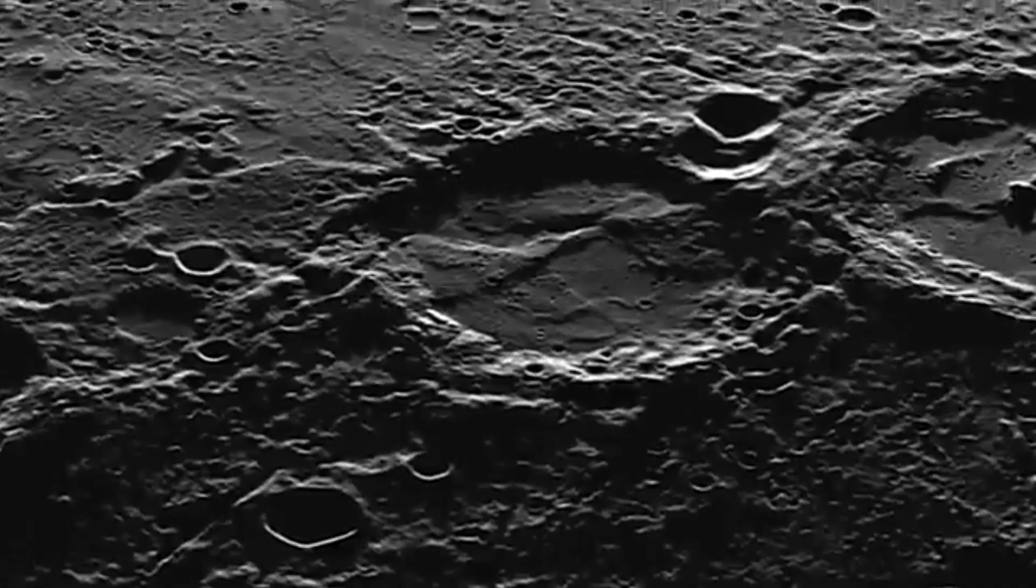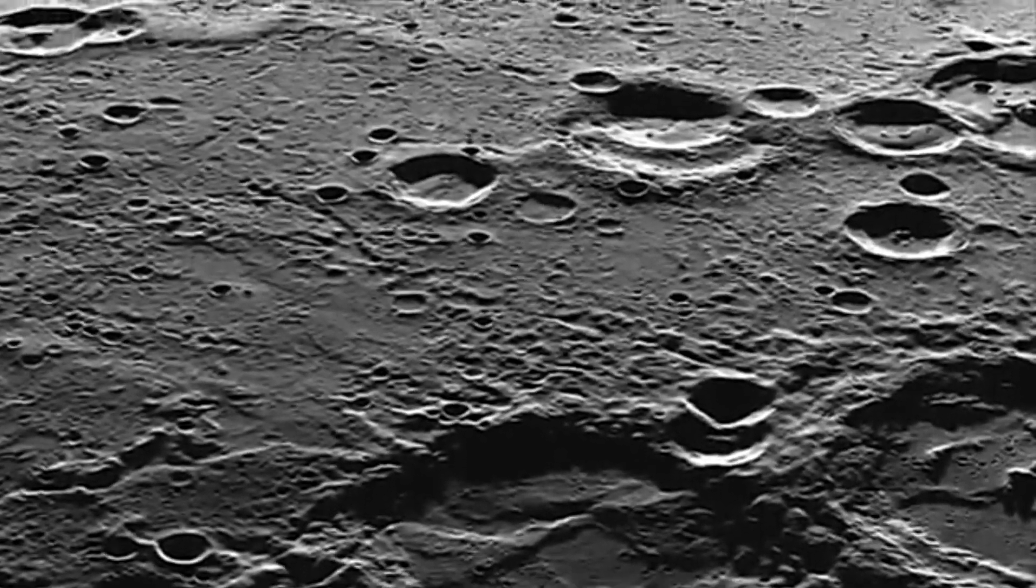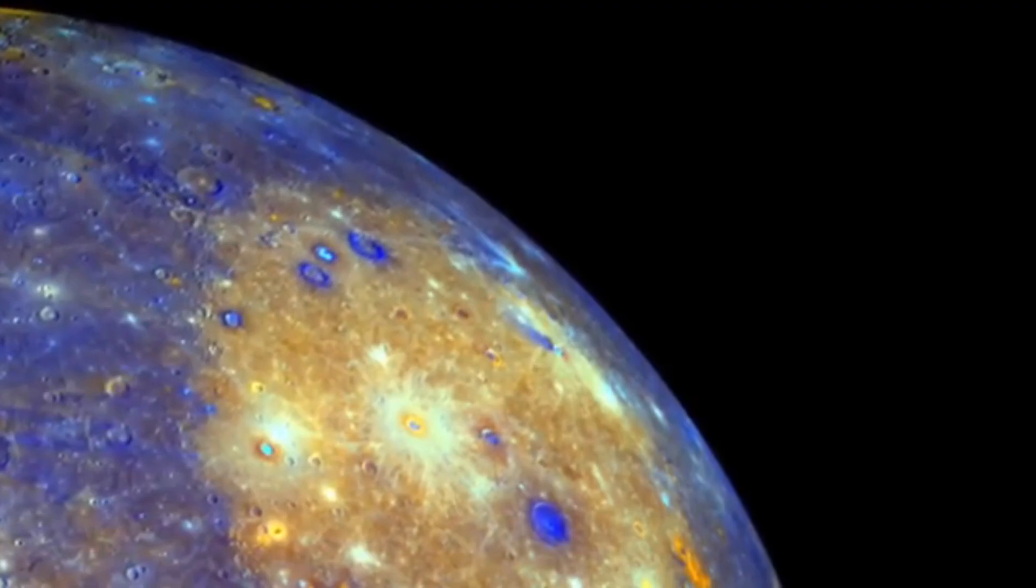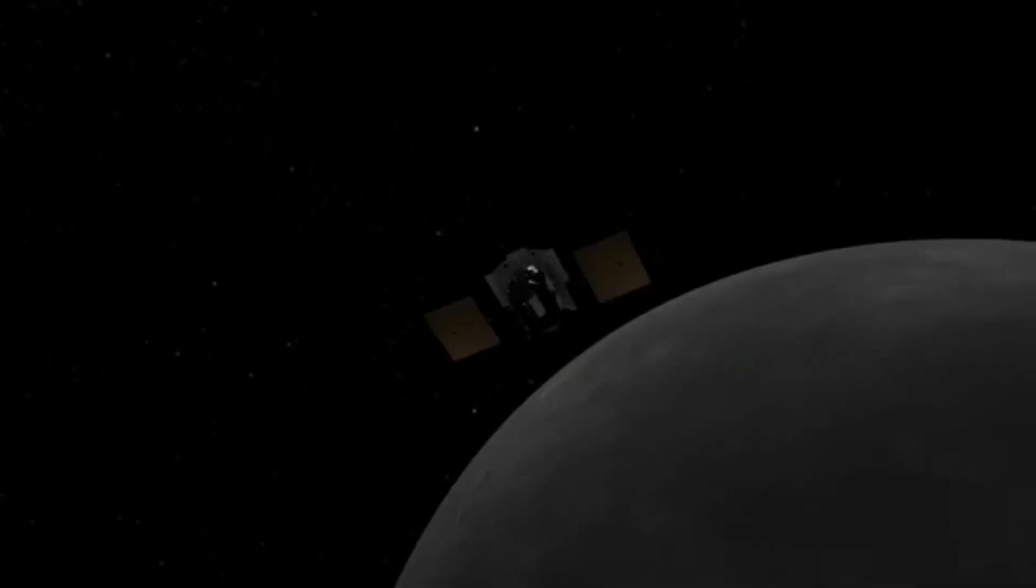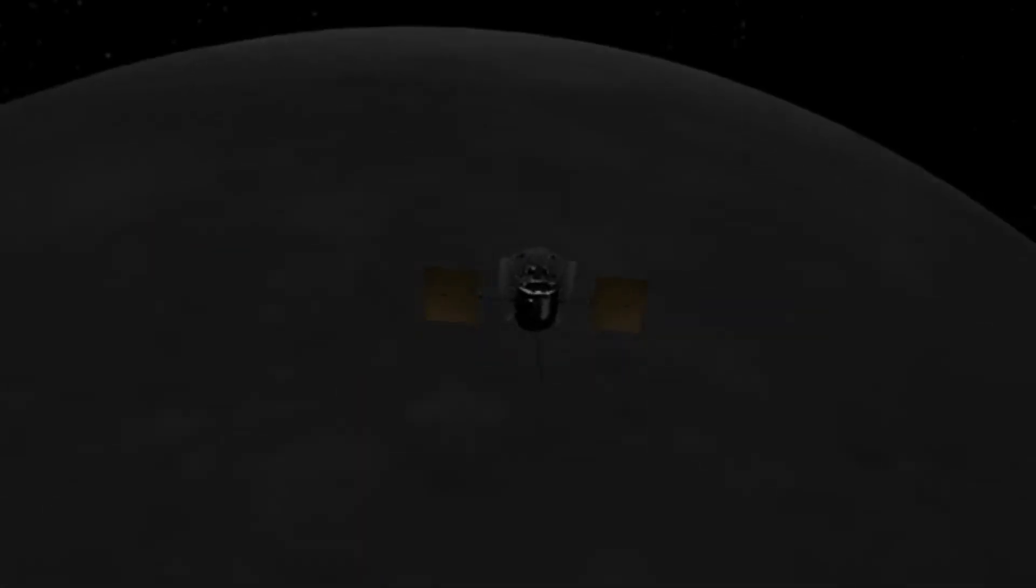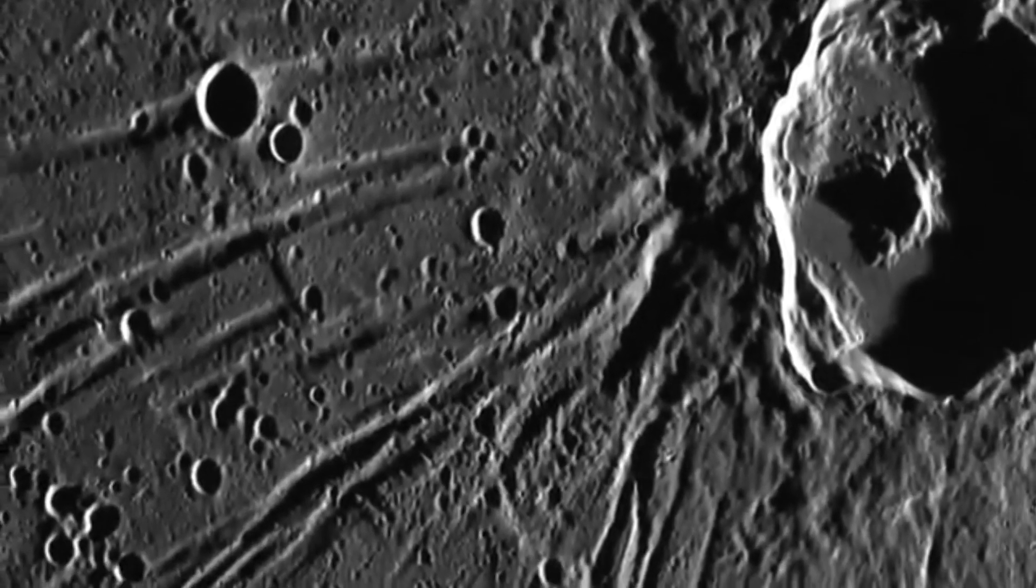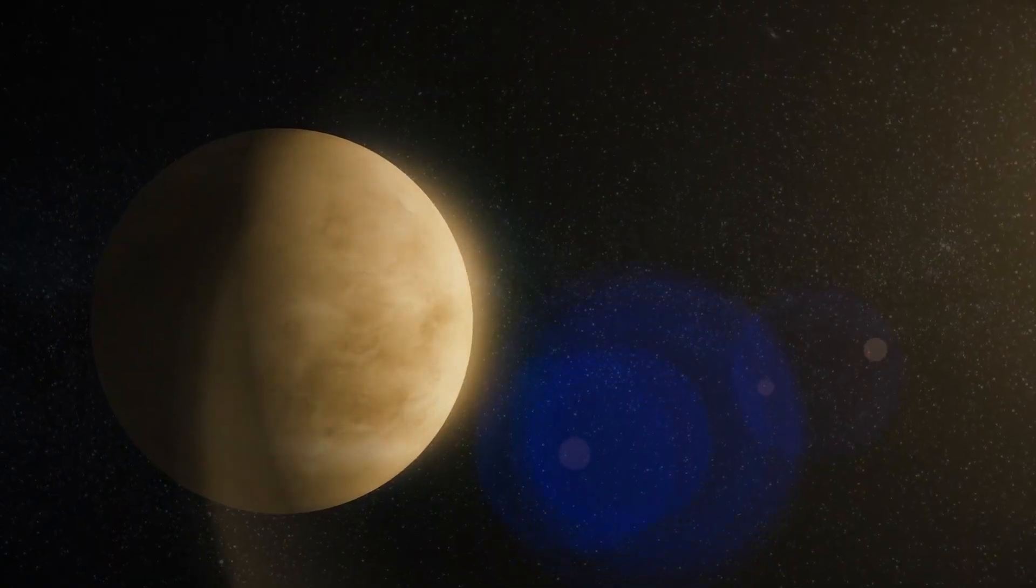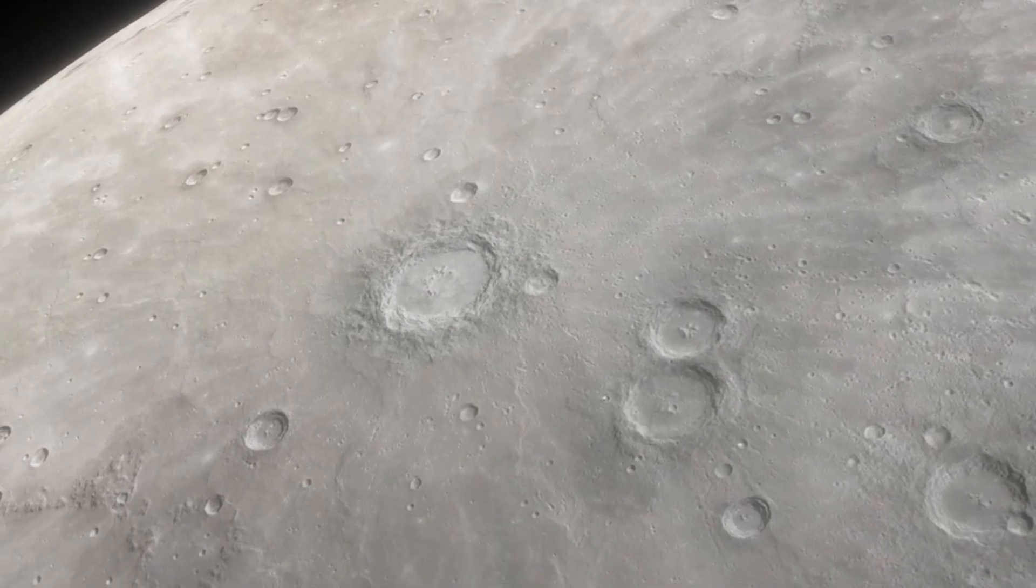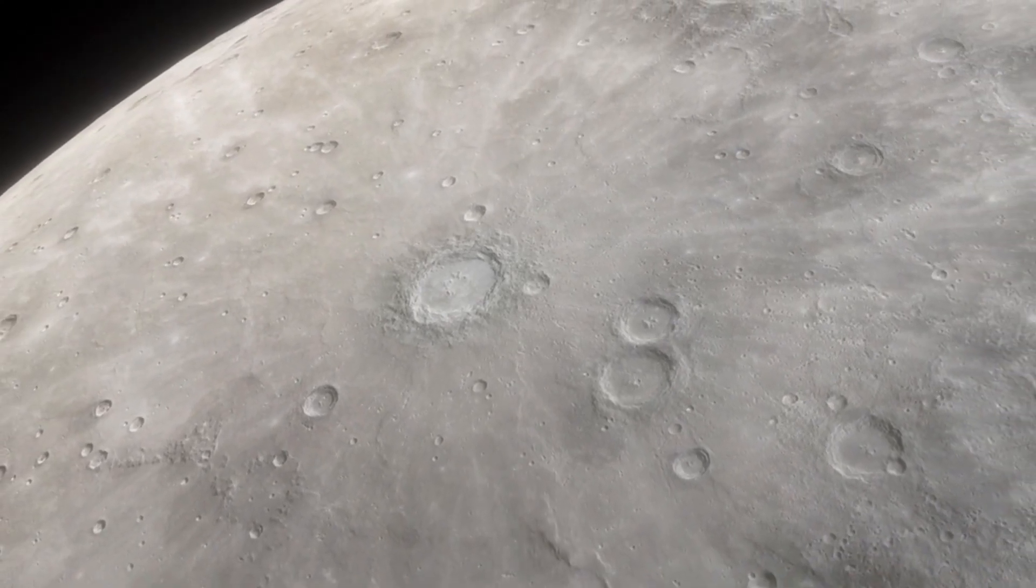Mercury's short year and long day also have intriguing effects on the planet's magnetic field. Despite its small size and slow rotation, Mercury possesses a global magnetic field, a surprising discovery. New research suggests that Mercury's magnetic field arises from a unique dynamo effect within its liquid metal core. Although Mercury's magnetic field is much weaker than Earth's, it plays an essential role in deflecting the intense solar wind.